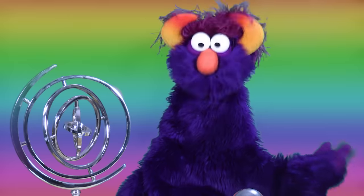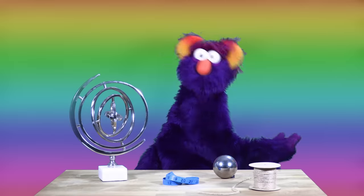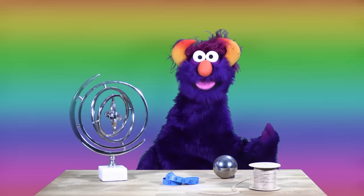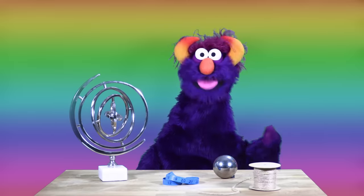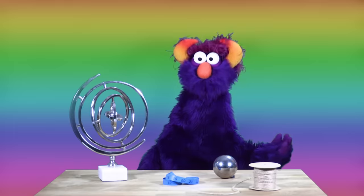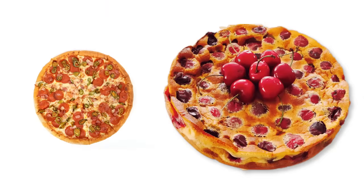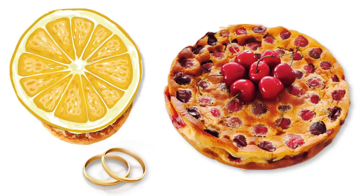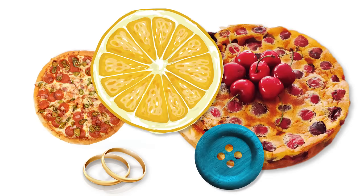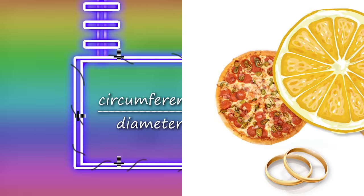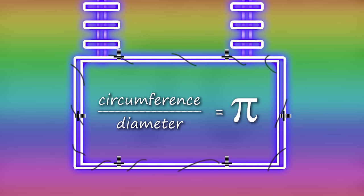Do you think this works for all circles? Yes! Mathematicians have shown this is true for all circles — any size pizza, any size pie, any kind of circle you want. The circumference divided by the diameter gives you pi.